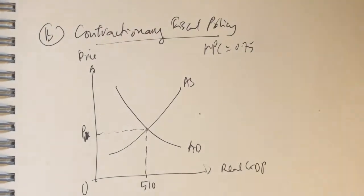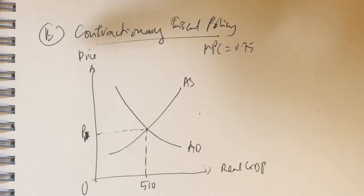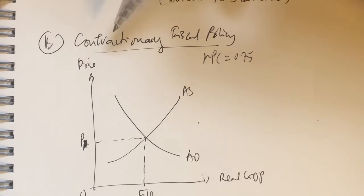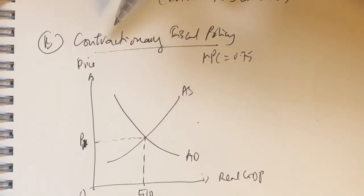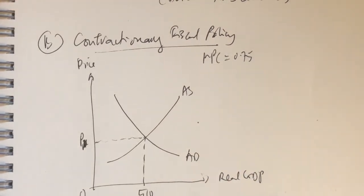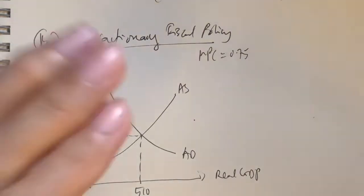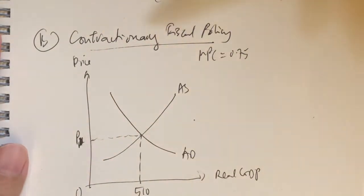Now let's take a look at contractionary fiscal policy. From the word contractionary or contract, what it means is it's trying to make something smaller, or reduce in size. So why would the government want to do this? The problem would probably be that the economy is experiencing excessive inflation — too high an inflation. A little bit of inflation is good for growth purposes, but if it's too much, the government would want to contain it. That is when they adopt contractionary fiscal policy.